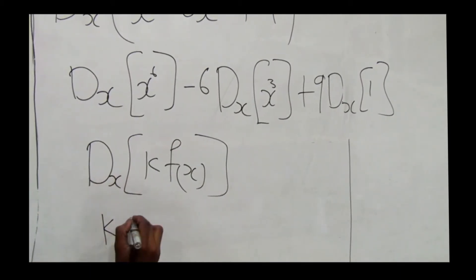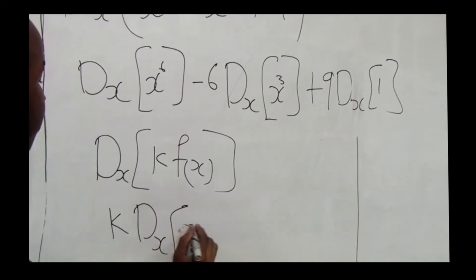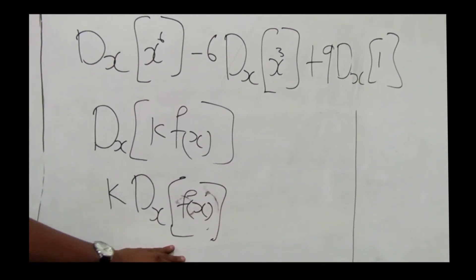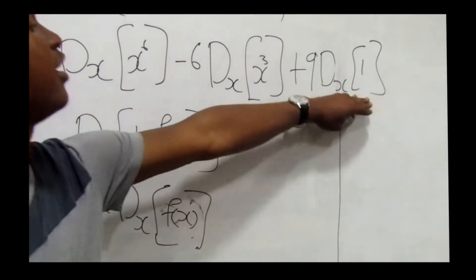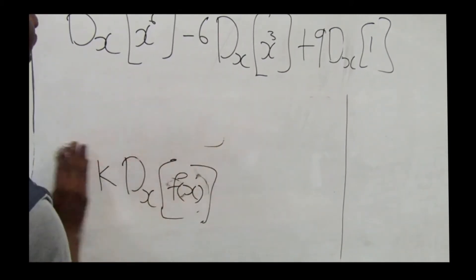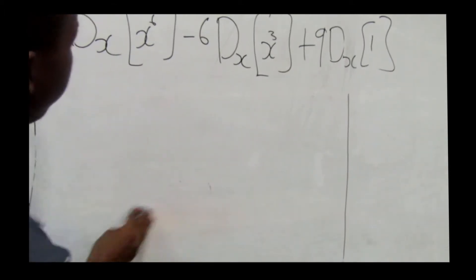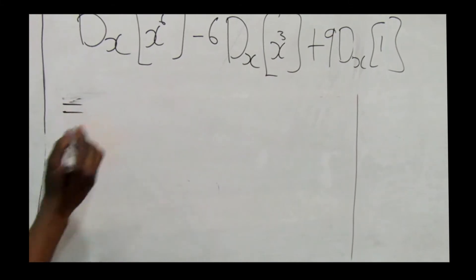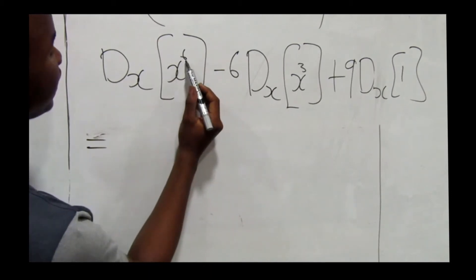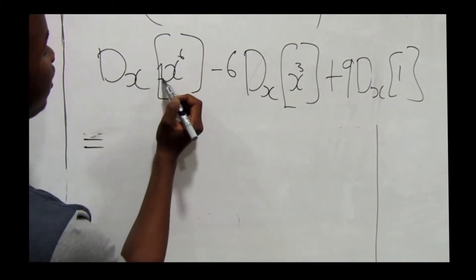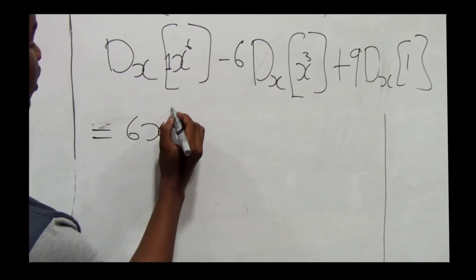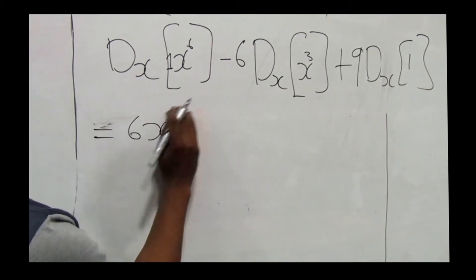We take the constant outside and differentiate f(x). When differentiating, we take the exponent, multiply by the base, then subtract one from the exponent. So for x⁶: 6 times 1 is 6, and 6 minus 1 gives us x to the power 5. Then for negative 6x³: negative 6 times 1 is negative 6.